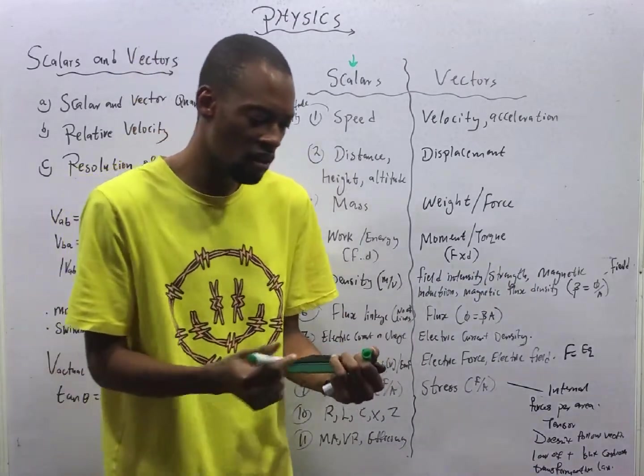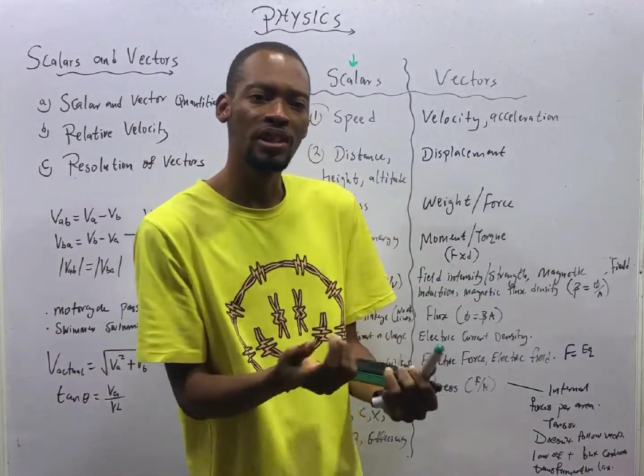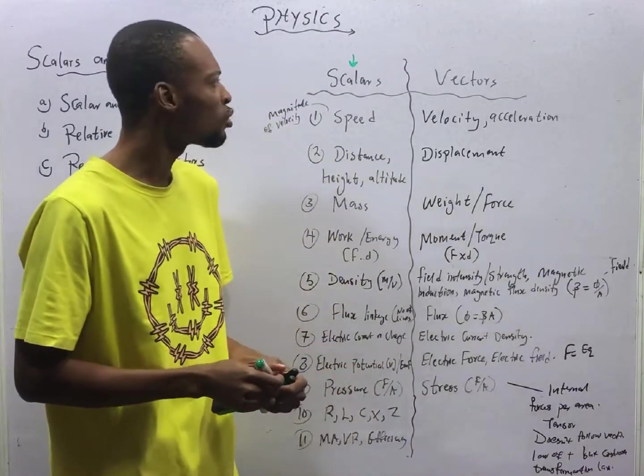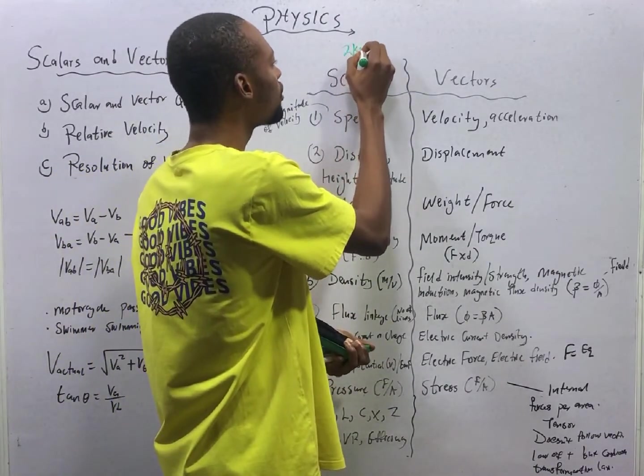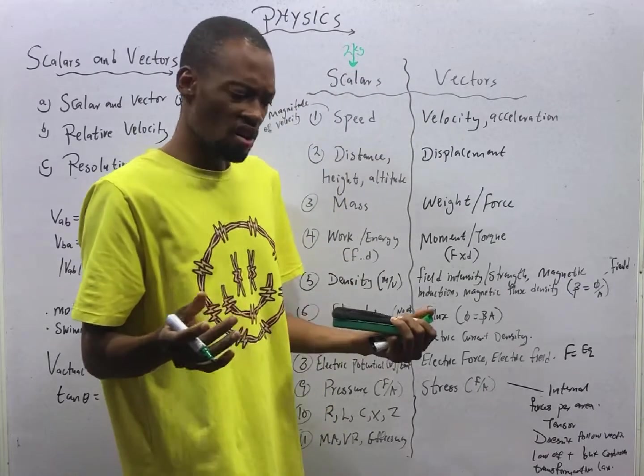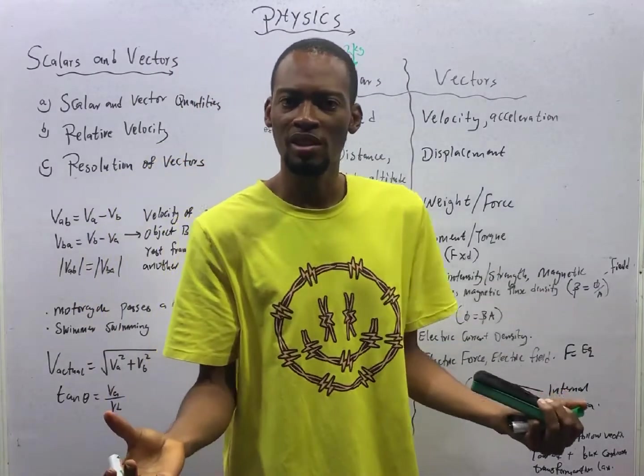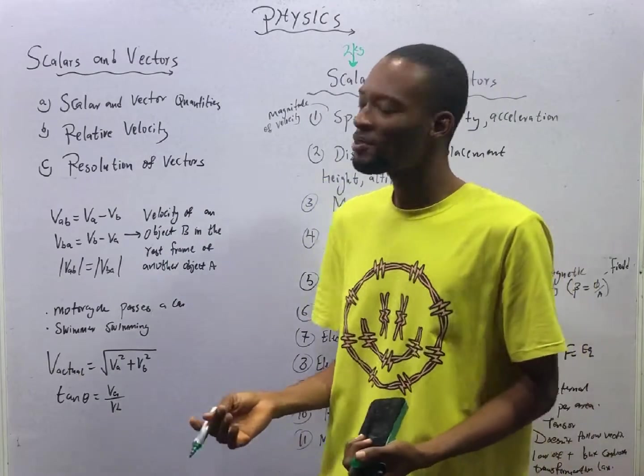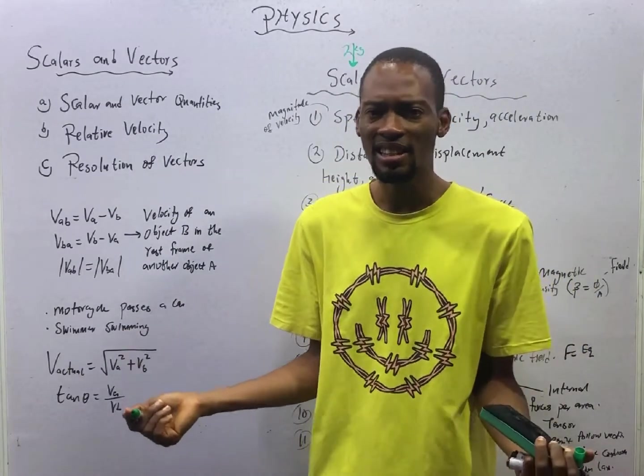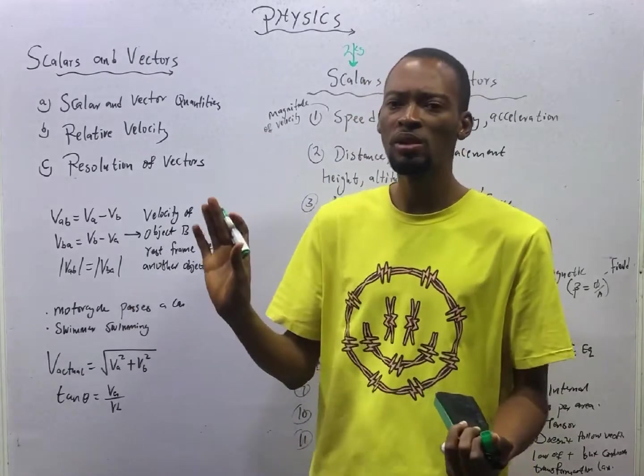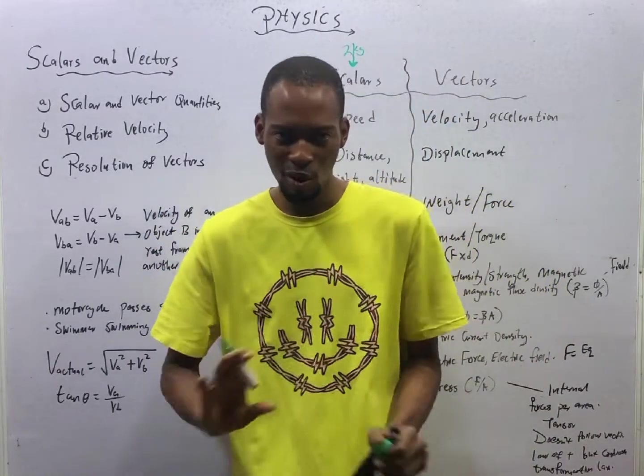If I ask you what is the mass of the chicken you are holding and you say it was measured to be 2 kg, I don't need more information from you. I don't need to ask you in what direction is the mass. The mass is 2 kg. That is a complete update.